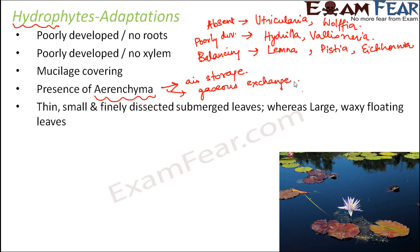The next adaptation involves leaf structure: thin, small, and finely dissected submerged leaves, whereas floating leaves are large and waxy. For plants with submerged leaves, the leaves are smaller in size, thin, and dissected so they can remain submerged underwater. Floating leaves, on the other hand, are quite large in size and have a waxy layering on their surface. Floating leaves also have stomata, which helps in gaseous exchange.